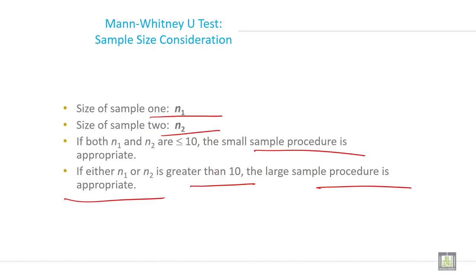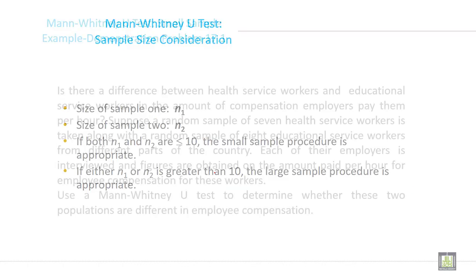When N1 and N2 are less than 10, you will apply the small sample procedure, and when N1 and N2 are greater than 10, then you can apply the large sample procedure.